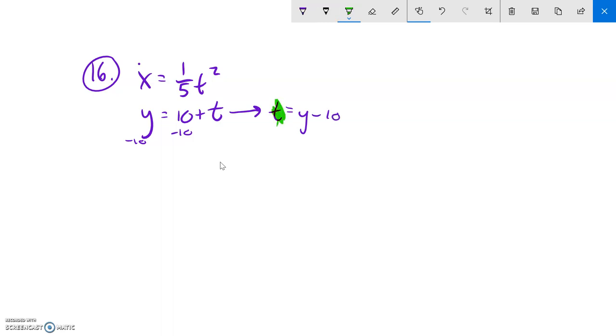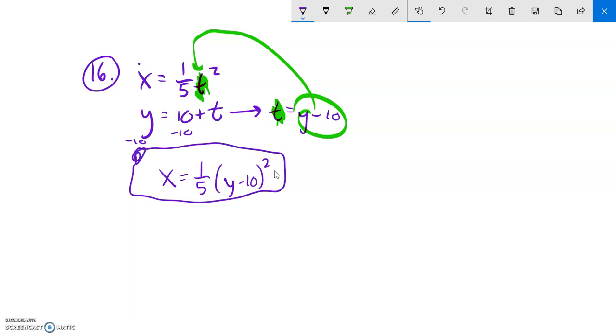So this t is t. So that means I can take that y minus 10 and substitute it into that t spot. So x equals one-fifth times t squared, but t is y minus 10. And there it is. You can leave it here if you'd like. That's fine.